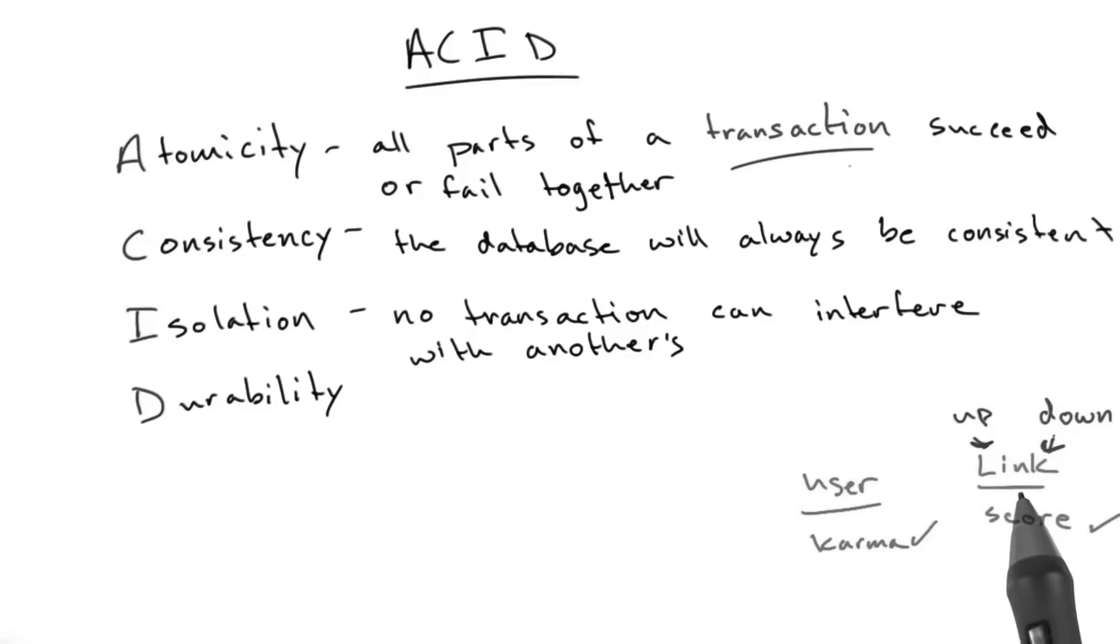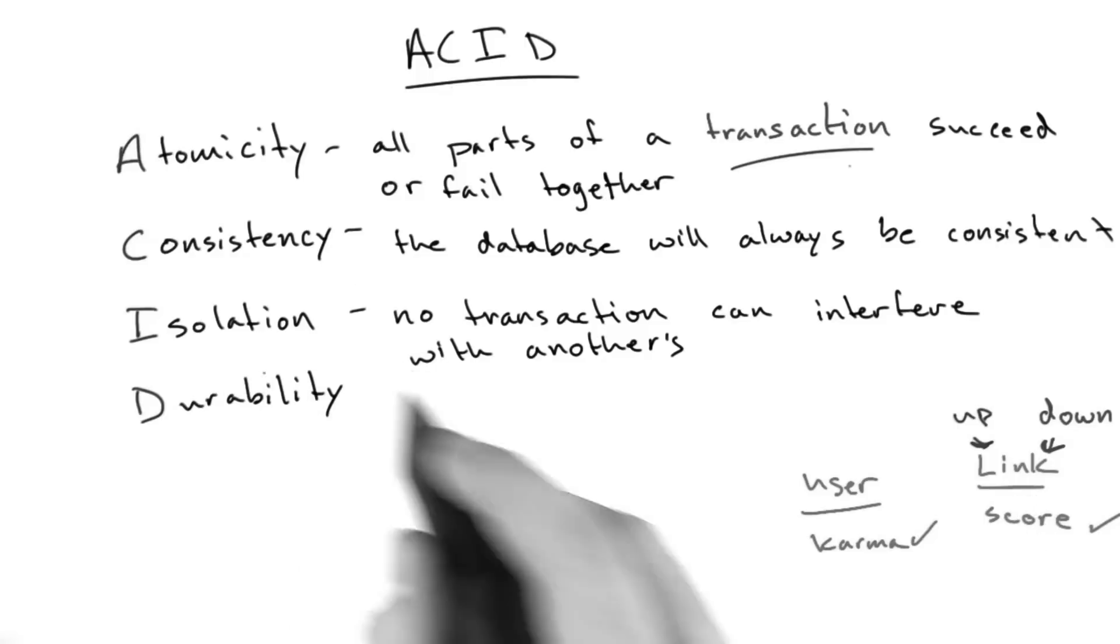Sometimes this is accomplished through locking. If two transactions affect the same row, only one can go at a time. And there are other ways of resolving transaction conflicts like that. Isolation refers to a database's ability to do that.